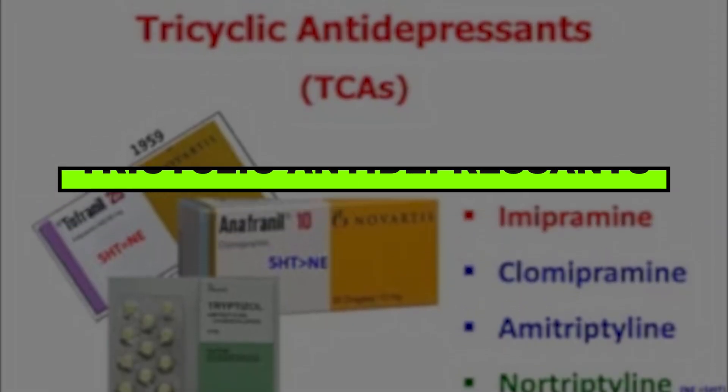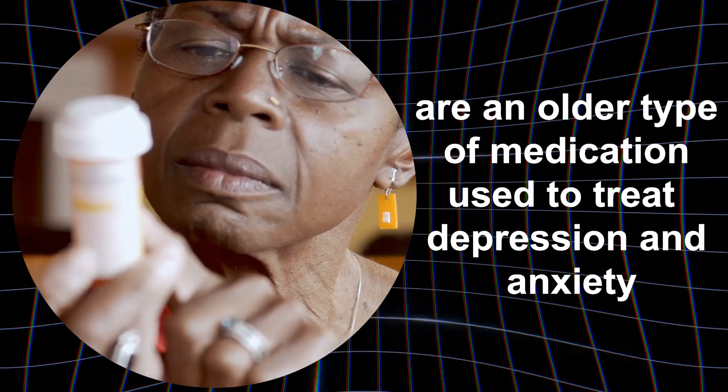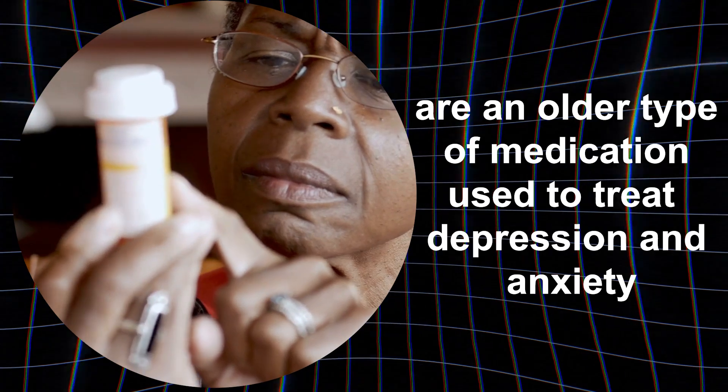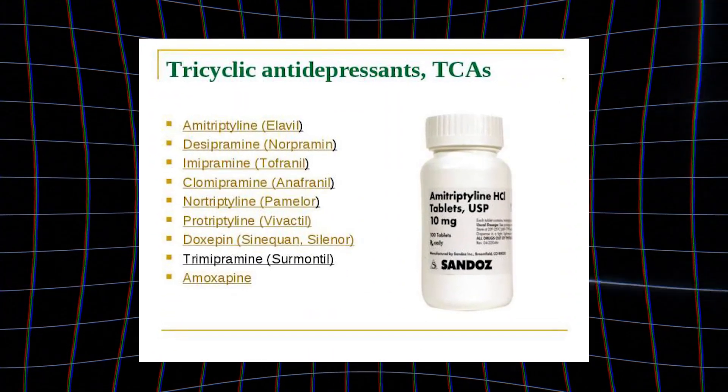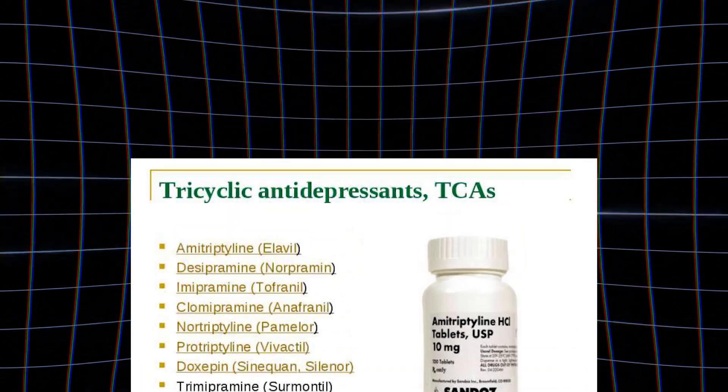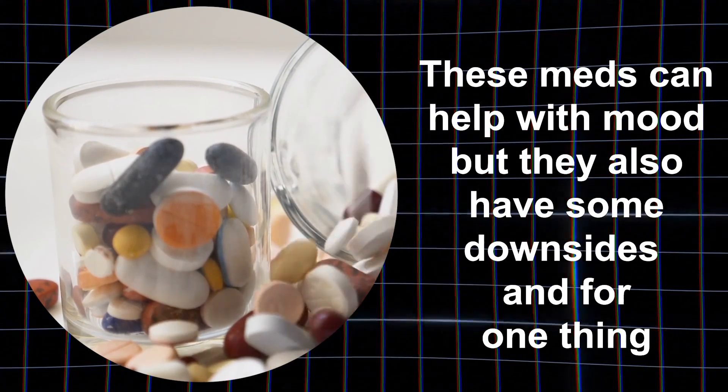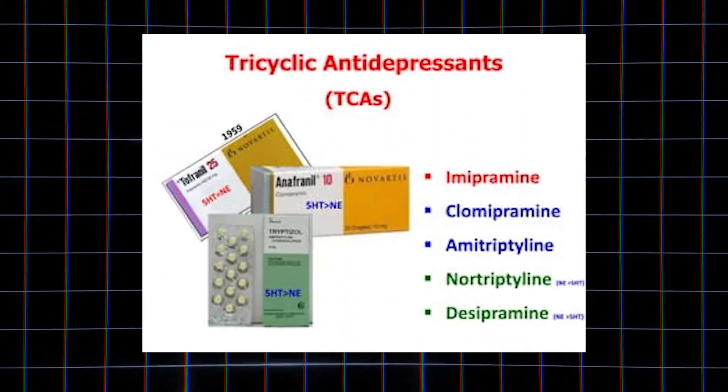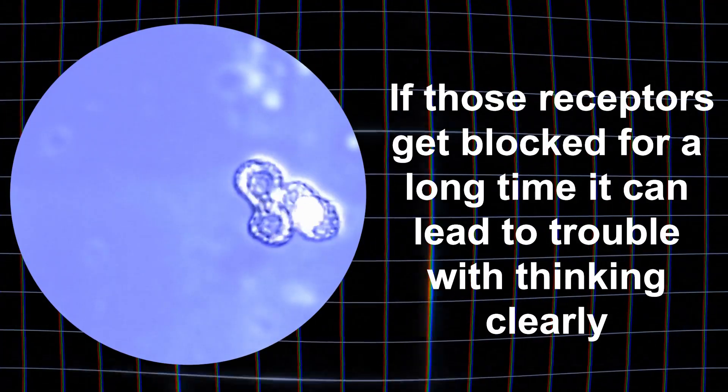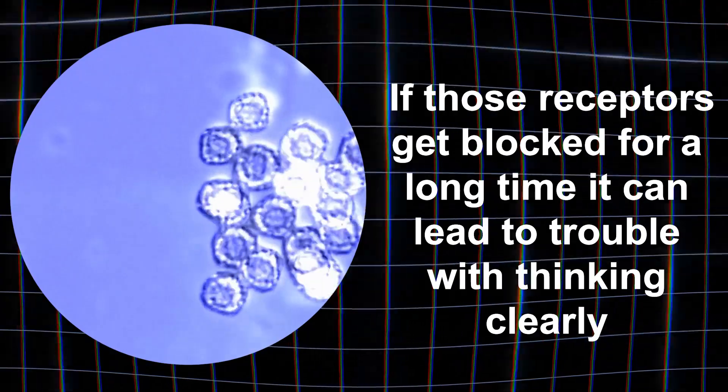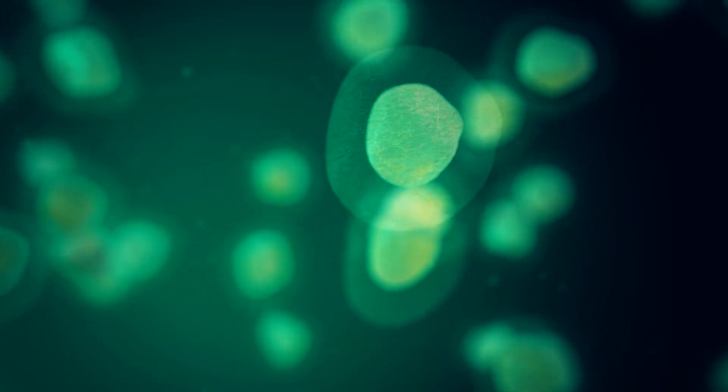Seven, tricyclic antidepressants. Tricyclic antidepressants, or TCAs, are an older type of medication used to treat depression and anxiety. Examples are Elavil, Pamelor, and Tofranil. These meds can help with mood, but they also have some downsides. For one thing, TCAs block acetylcholine, which is key for memory and learning. If those receptors get blocked for a long time, it can lead to trouble with thinking clearly and a higher chance of dementia down the road.